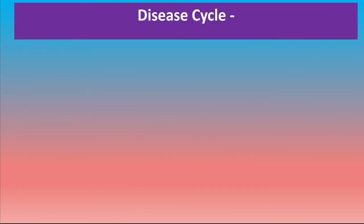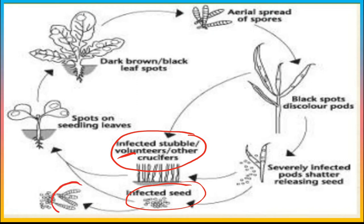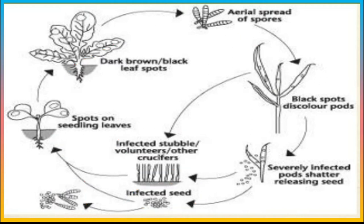Disease Cycle: जो pathogen है वो infected seeds में, infected crop debris में, volunteer crops या collateral hosts में survive करते रहते हैं, और इनका survival spores के form में होता है। यह spores बाद में plants में infection करते हैं, वहाँ पर multiply होते हैं, फिर से spores बनाते हैं, और हवा के द्वारा दूसरे plants में जाते हैं — इसी को secondary infection cycle कहते हैं। बाद में यह seeds और crop debris में survive करते रहते हैं। यह एक बहुत simple type का disease cycle है।